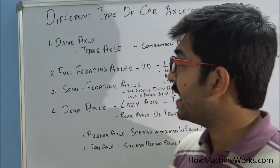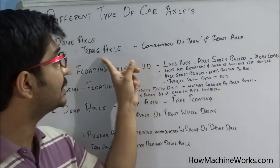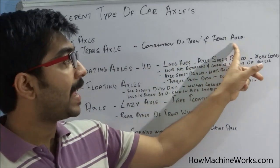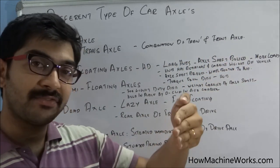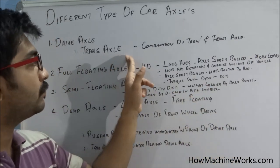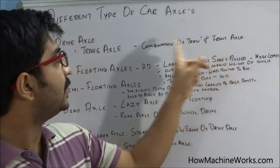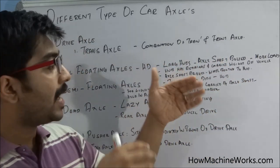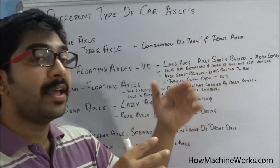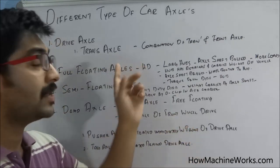Nowadays we also see trans axles, which are a type of drive axle that combines the transmission and the front axle together. In a small front wheel drive vehicle, the trans axle comes into play — the front axle gets the drive from the engine, and the transmission is combined with the axle at that section, which is called the trans axle.